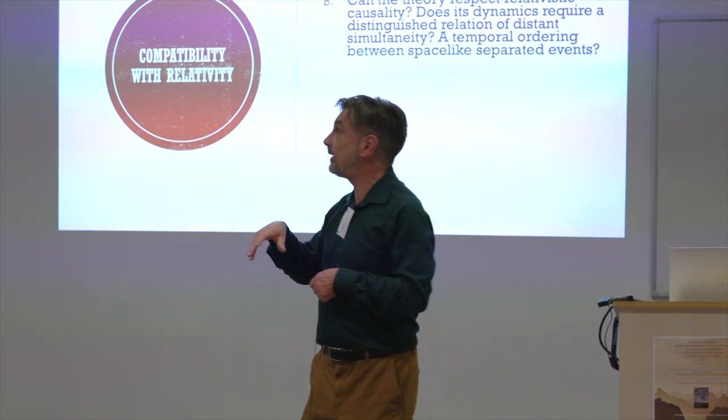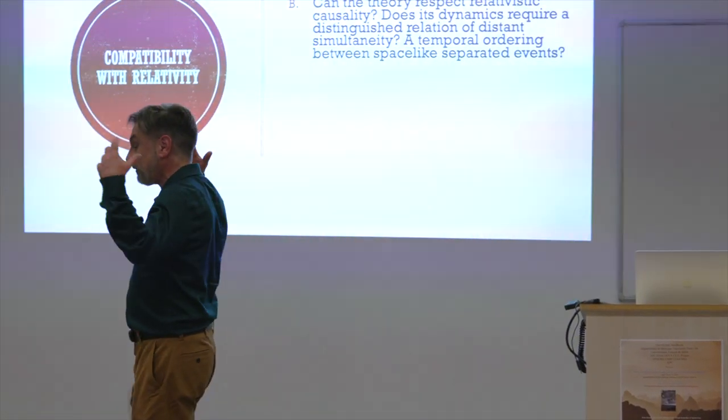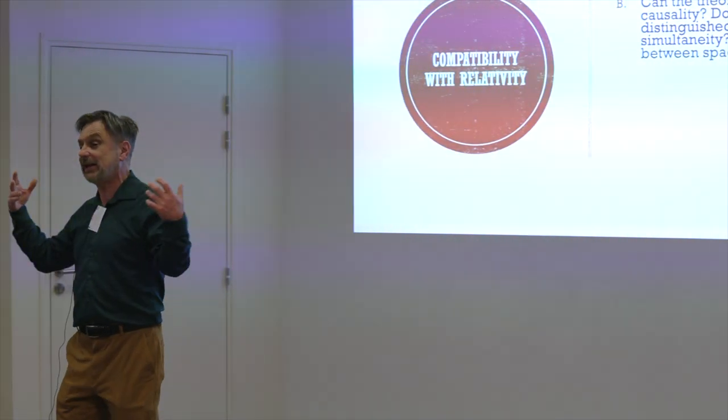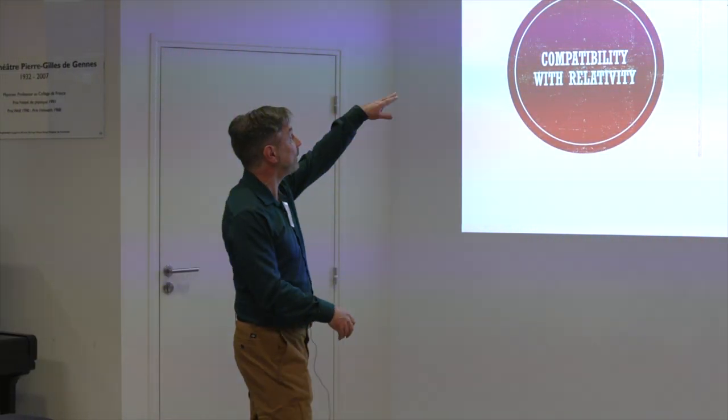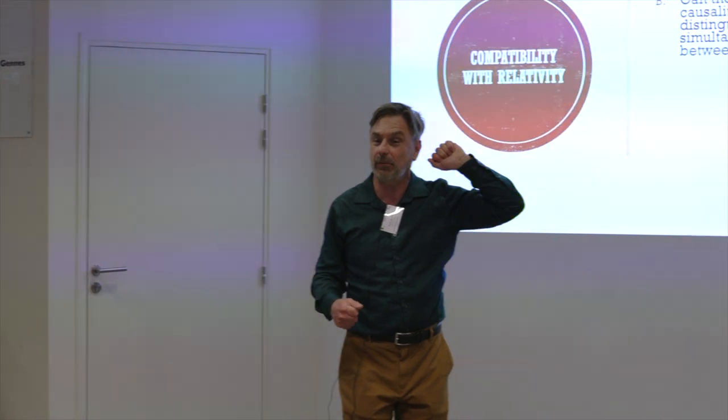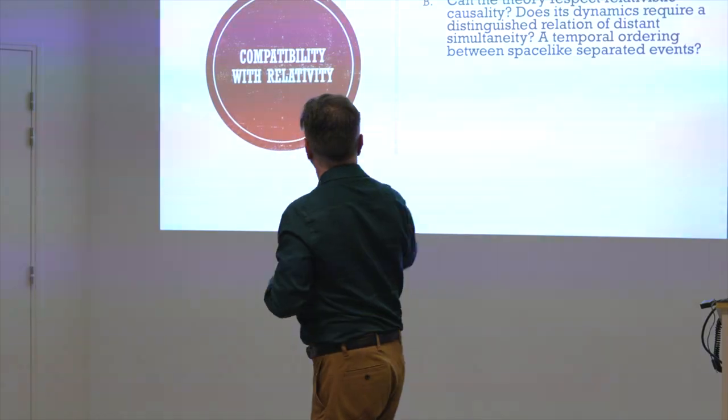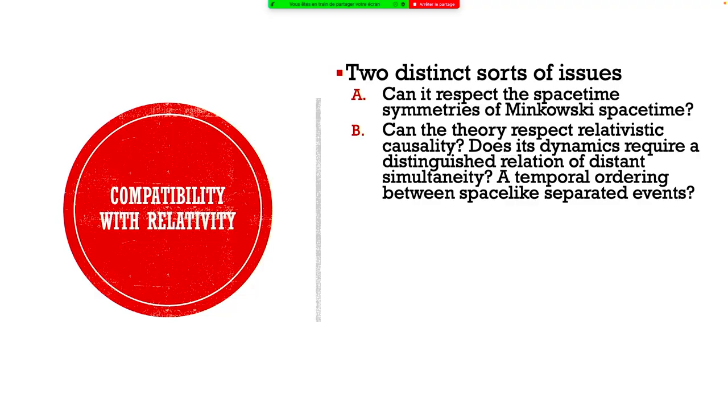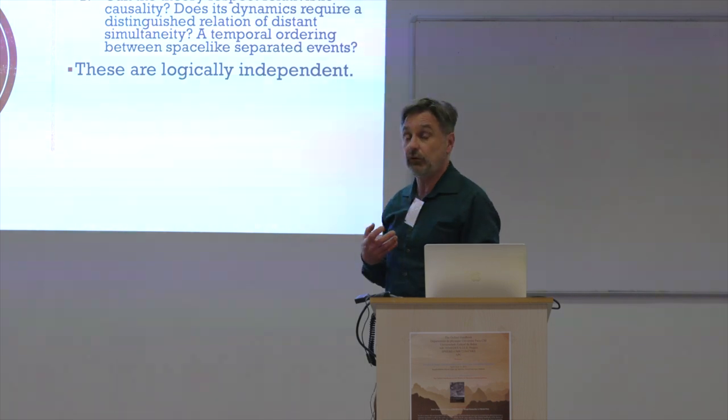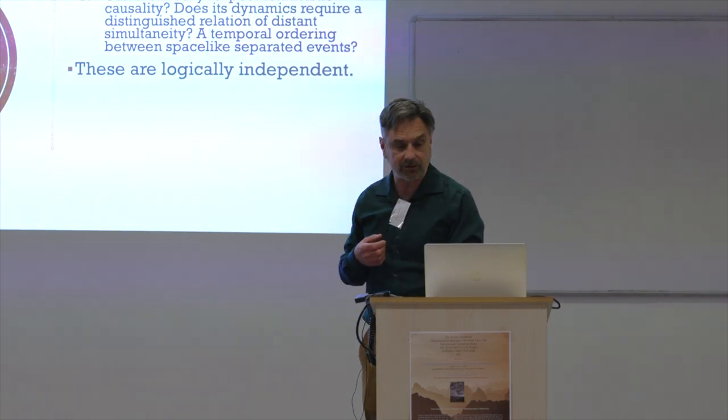And one way to see that's a different sort of question is that if our background spacetime is, say, a general relativistic spacetime, then we don't really care whether our theory respects the symmetry of Minkowski spacetime except maybe locally and approximately. But this other set of questions is in full force because in the general relativistic spacetime you still think that the causal structure of spacetime is given by the light cone structure. Sometimes they're conflated, these two sorts of questions are conflated, but they're in fact logically independent.